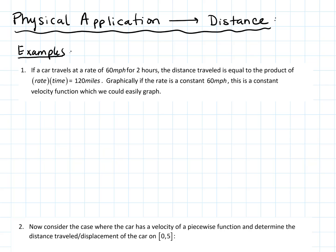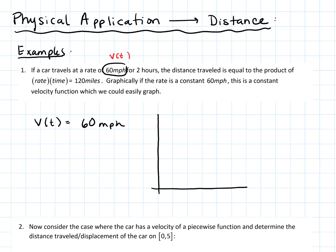But what does that look like graphically? 60 miles per hour is a velocity, so if we had a velocity function v(t) that was a constant 60 miles per hour — the velocity never changes — then t is our time in hours on the x-axis, and our y-axis is velocity. We're just traveling along at exactly 60 miles per hour.